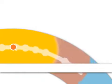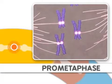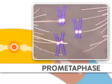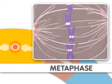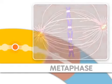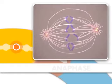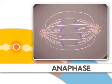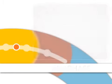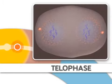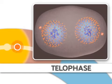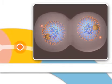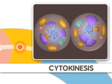Next comes prometaphase, where microtubules attach to the chromosomes. This step is followed by metaphase, where the chromosomes align. Metaphase is followed by anaphase, where the chromosomes separate. Finally, during telophase, nuclear membranes reappear around the two sets of chromosomes. Mitosis is now complete. After mitosis, two new cells are formed by a process called cytokinesis.